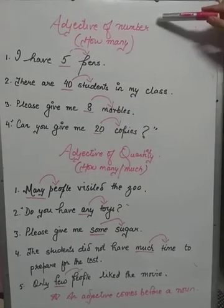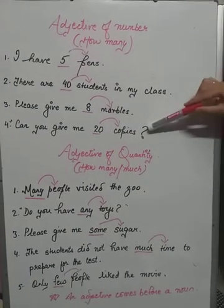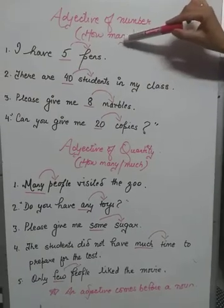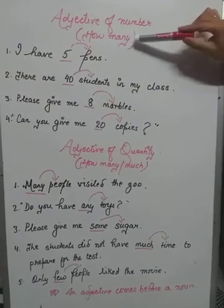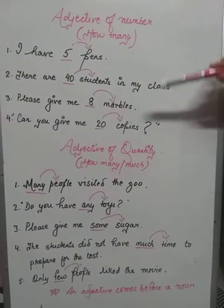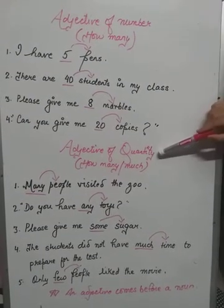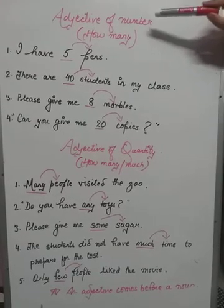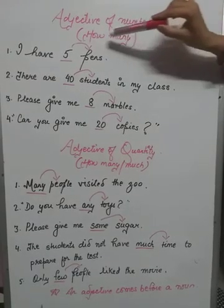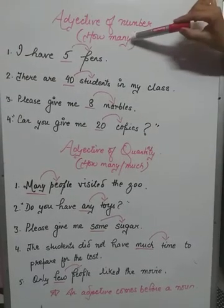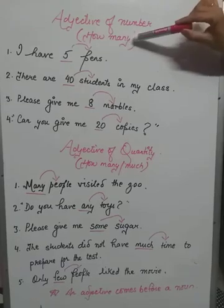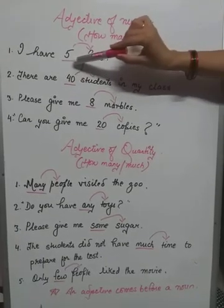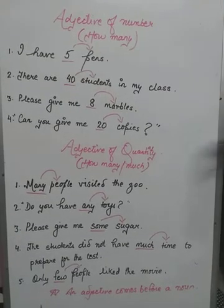In adjective of number, it will tell you only how many. This is countable nouns, and direct numbers will be given.